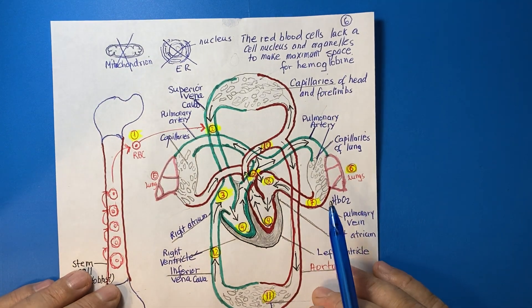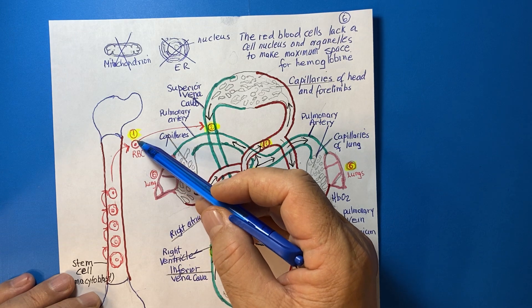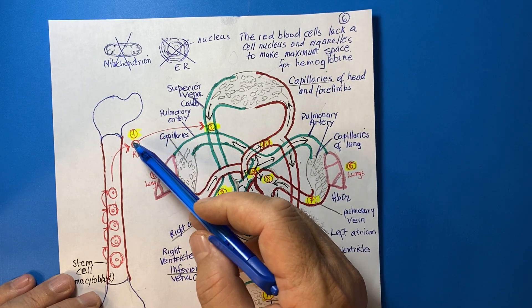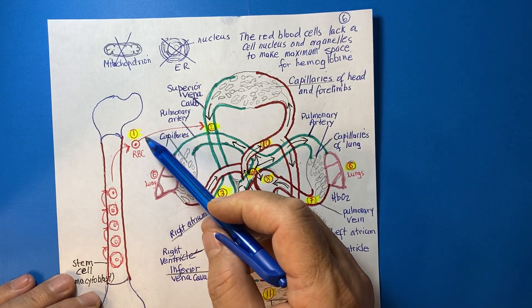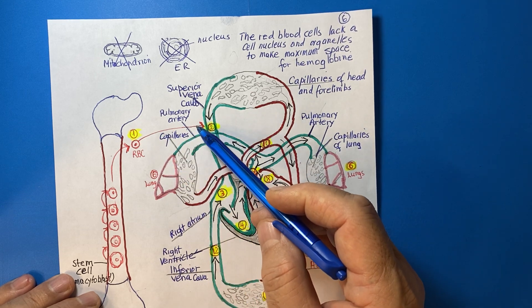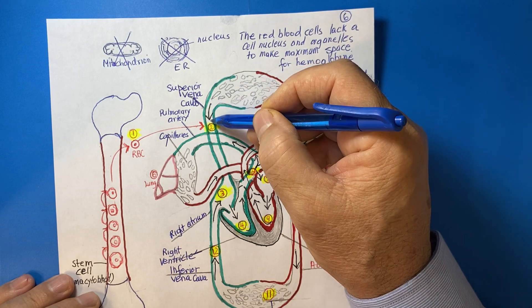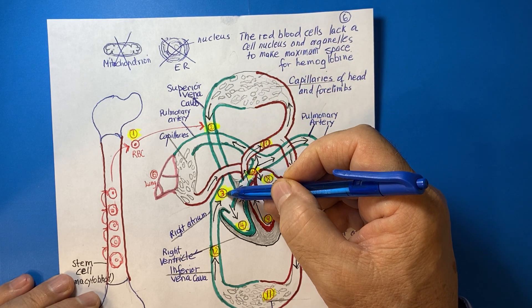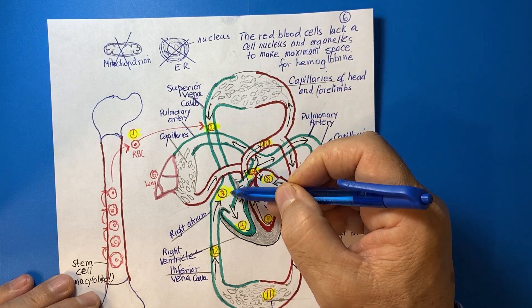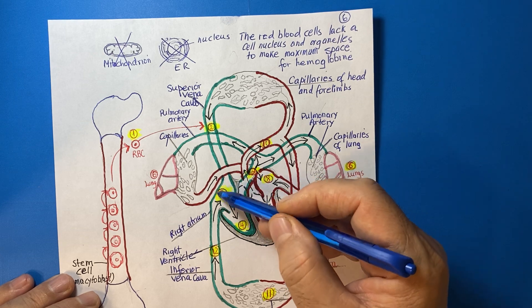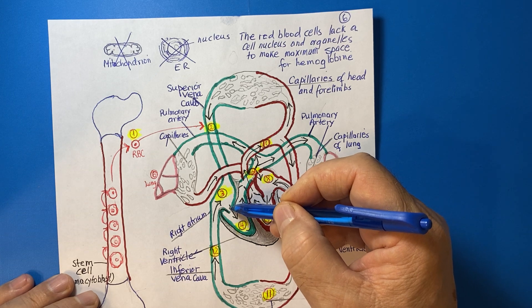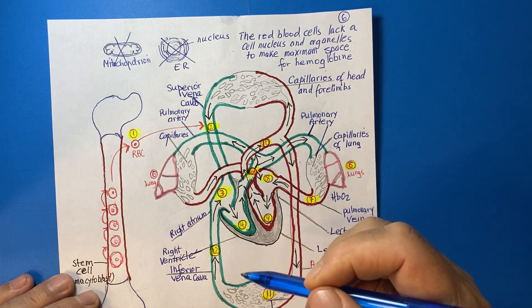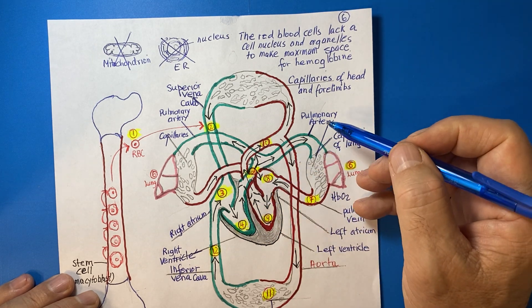The first stage: after leaving the bone marrow, the red blood cells mature without oxygen — deoxygenated — and move through the veins and circulatory blood vessels, reaching the superior vena cava. The blood then flows down to the right atrium, which contracts and pushes the red blood cells through the atrioventricular valve into the right ventricle. The right ventricle then pushes the blood through the pulmonary artery.